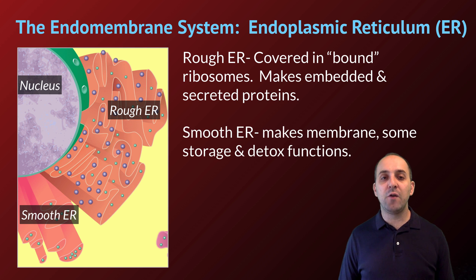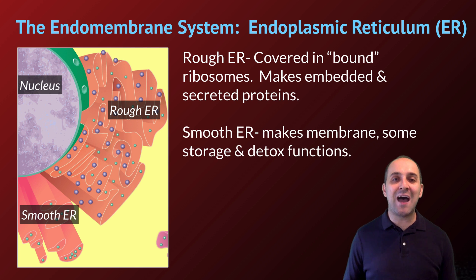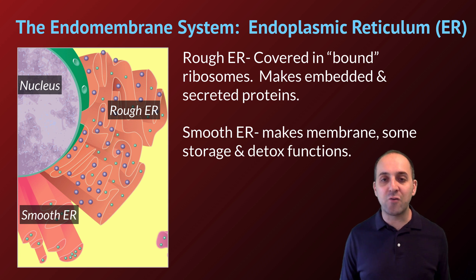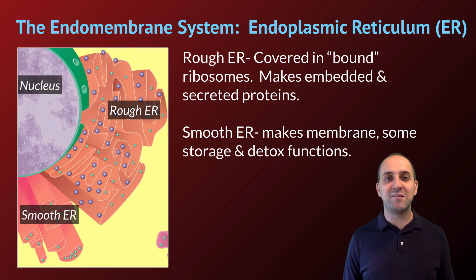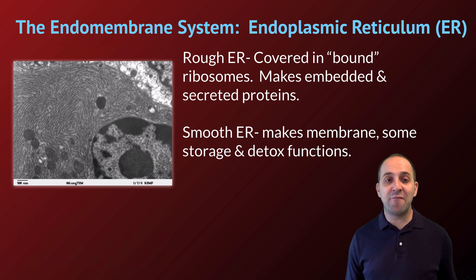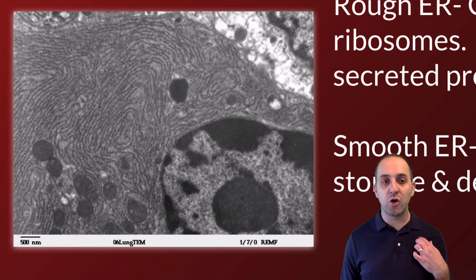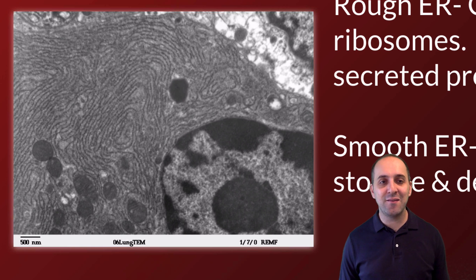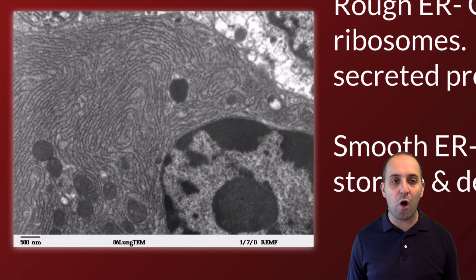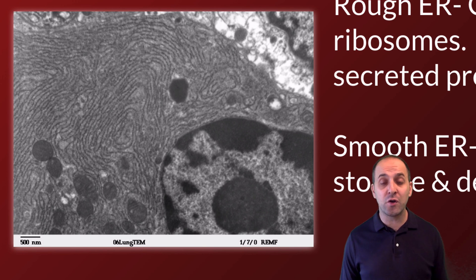Moving from the rough endoplasmic reticulum there's a transition to the smooth endoplasmic reticulum, which does not have bound ribosomes on its surface. The smooth endoplasmic reticulum is really the organelle that makes all the membrane that's going to be used by the cell. It also has some functions in storage and detoxification of certain compounds. This transmission electron micrograph shows the nucleus as the large speckled blob at the bottom right, while the endoplasmic reticulum fills most of the rest of the image as channels of membrane — an incredibly important organelle in the endomembrane system.